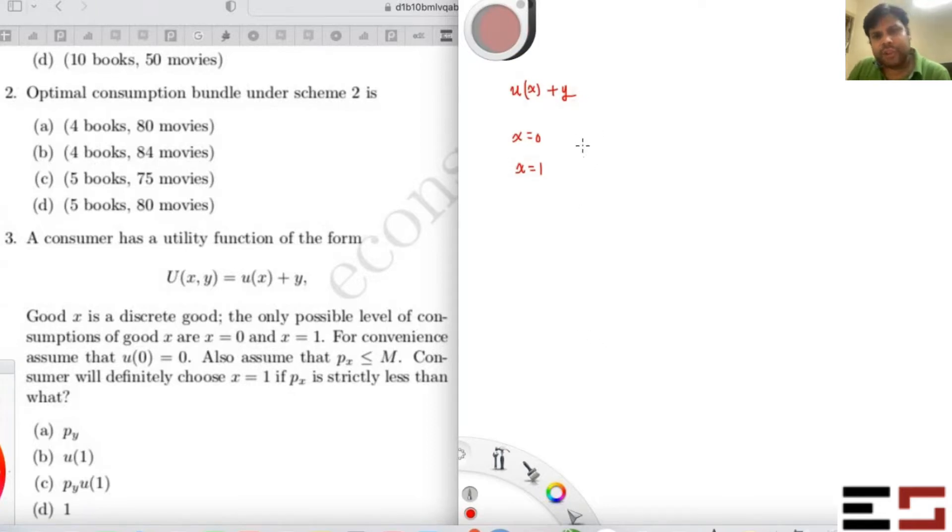You can assume that u(0) is 0. Suppose price of X is less than or equal to M. So what that means is basically you can afford one unit of X. This condition says that you can afford one unit of X. So the question is, the consumer will choose X equal to 1 under what condition?